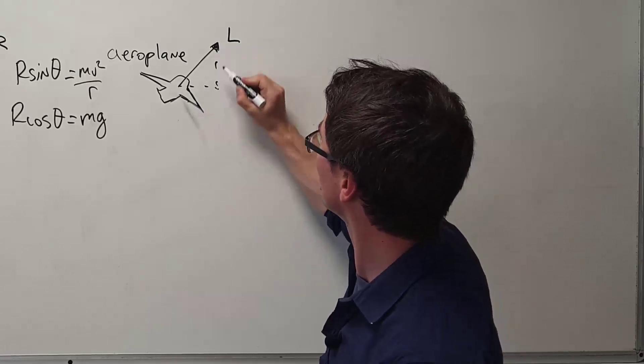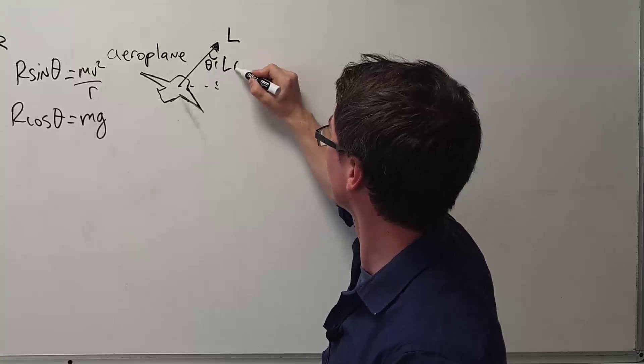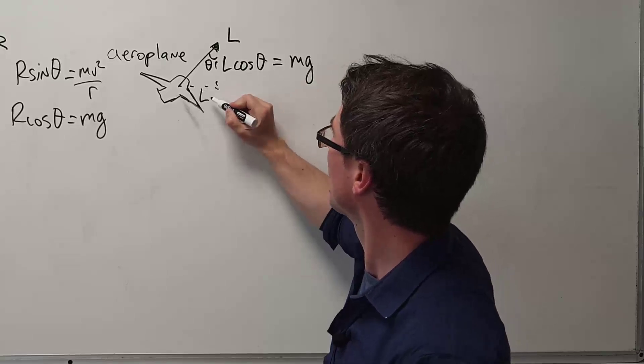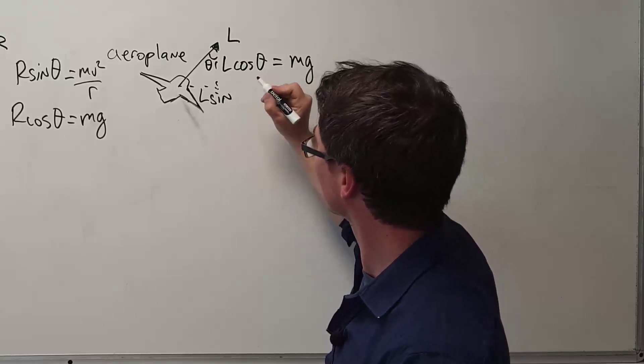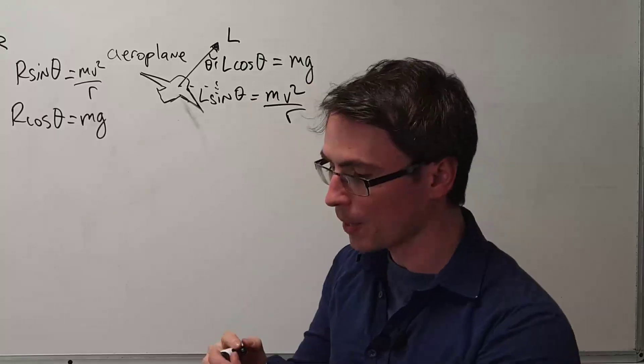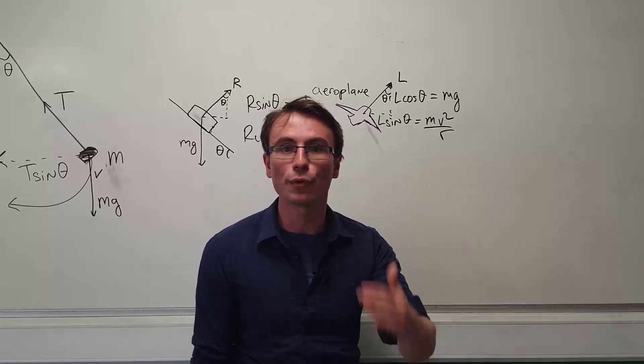Or we could also have an airplane in which the lift force acts in exactly the same way, and all we would need to do is split that into components. If this angle here is theta, then we know that L cos theta will have to balance out mg, and L sine theta will have to provide mv squared over r, assuming that both objects do not actually move vertically.